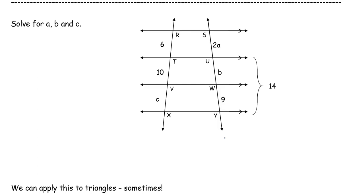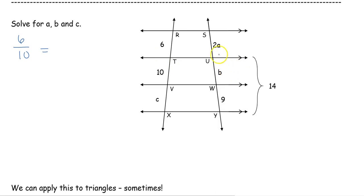The great thing about this is there's almost no way to set up a wrong proportion because they are split proportionally — you just have to follow a pattern. We can't go diagonally, but when I draw these they're going to be divided so I could have a pattern of 6 over 10. If I go from here to here, I want to follow that same pattern on the other transversal, so if I go from 6 to 10, I've got to go 2a to b.